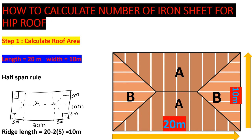Once we have the length and width, we use the half-span rule. That means we take half the width. The width is 10 meters, so half of it is 5 meters. From each edge to the ridge line is 5 meters on both sides. This rule applies on all sides, so from where they meet at the ridge point, each segment is 5 meters.